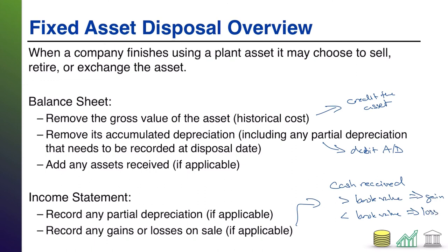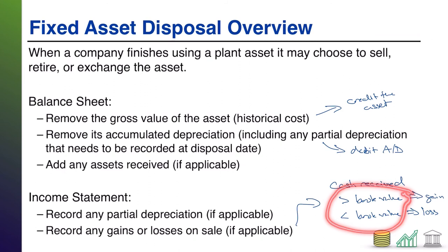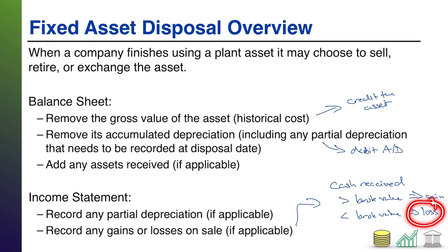Gains are essentially revenues, but not part of your operations, so they're going to show up in the non-operating section of your income statement. You might see 'gain on sale of building,' 'gain on sale of equipment,' or more generically 'gain on sale of fixed asset.' Losses are the opposite — they're an expense, but a non-operating expense, so they show up in the non-operating section as well. This is just a way of telling investors that we had an asset with a certain book value, and either we got paid more than that and profited off the sale, or we got less and lost on the sale. This was not inside the normal course of business — it was a transaction outside of normal operations, which is why it goes in the non-operating section.